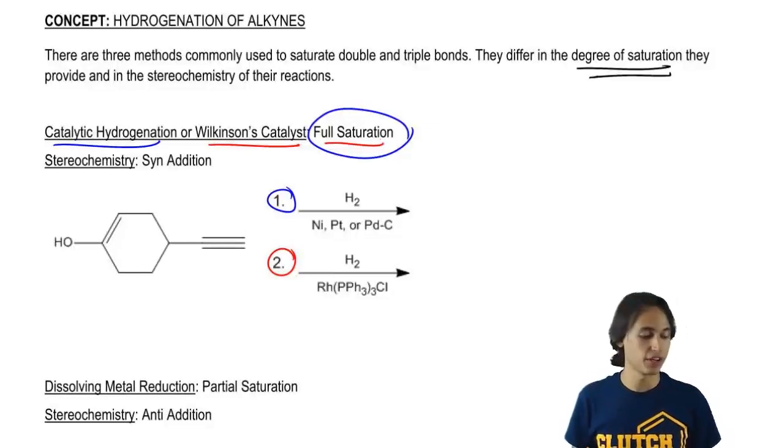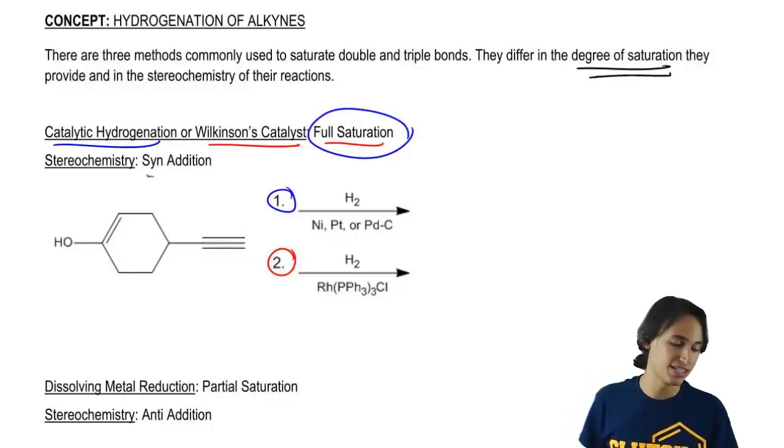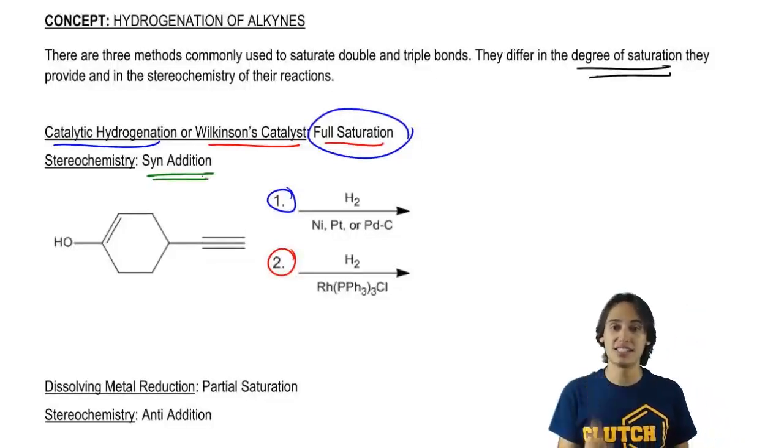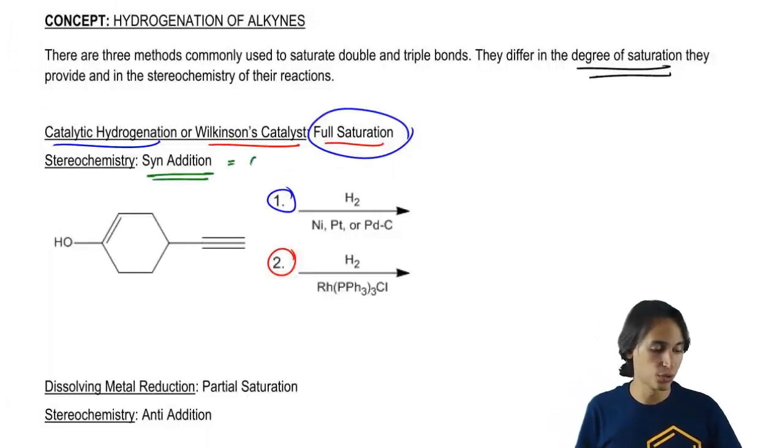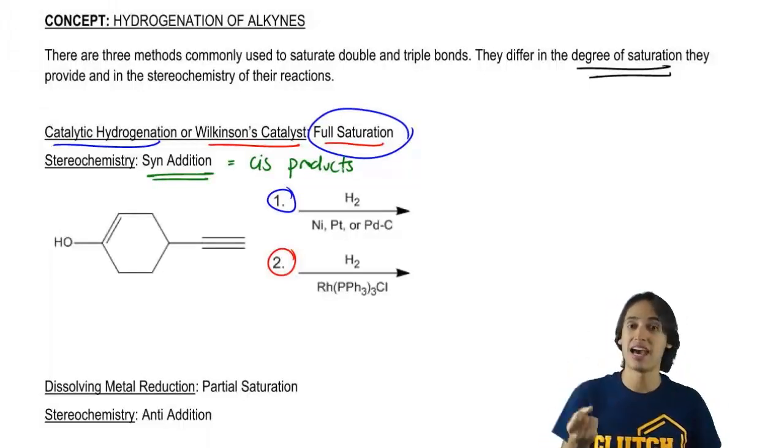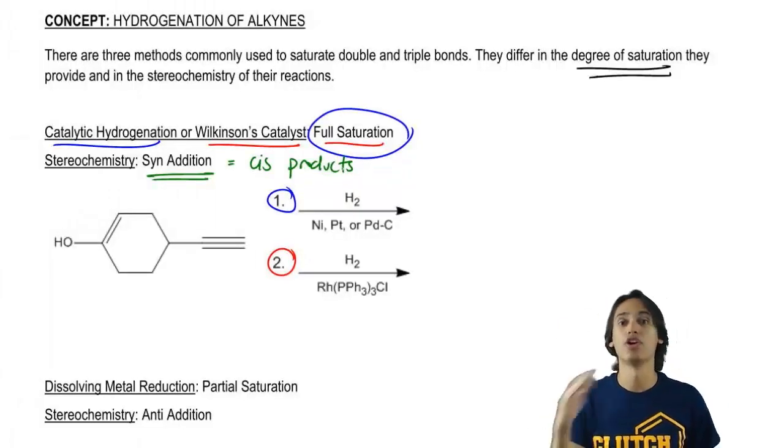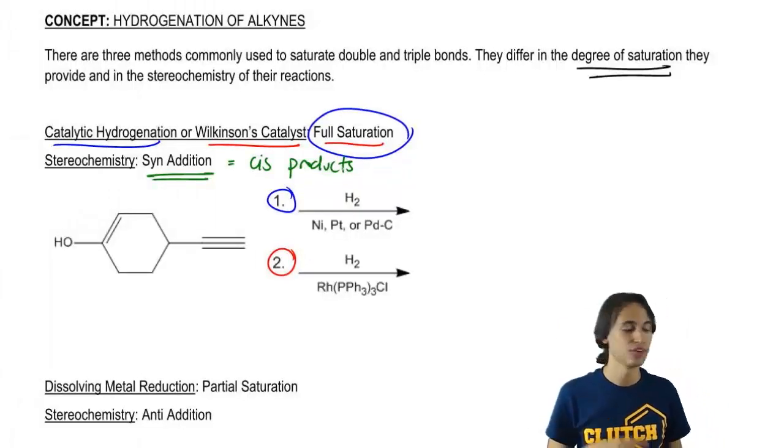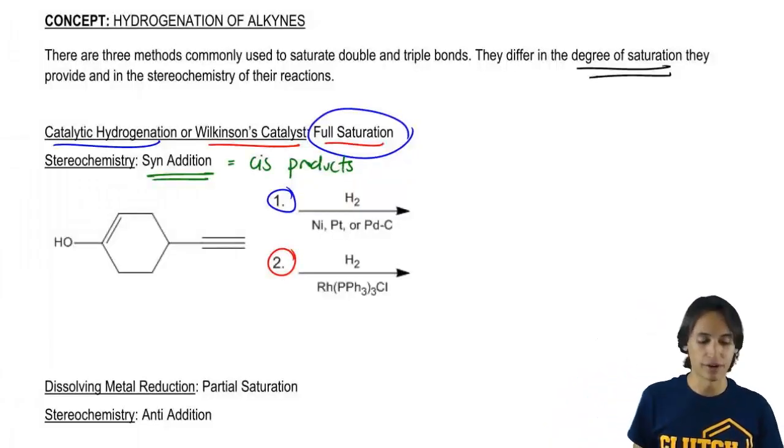One more thing before I draw these products: notice that the stereochemistry says syn addition. Syn addition is another way to just say that we're going to get cis products. So what that means is that I would expect the hydrogens that we're adding to add from the same side of the double bond or the same side of the triple bond.